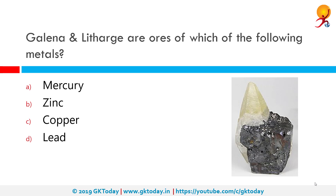Galena and Lightharch are ores of which of the following metals? The correct answer is lead. Galena, also called lead glance, is the natural mineral form of lead sulphide (PbS). It is the most important ore of lead and an important source of silver. Lightharch is a secondary mineral which forms from the oxidation of galena ores.